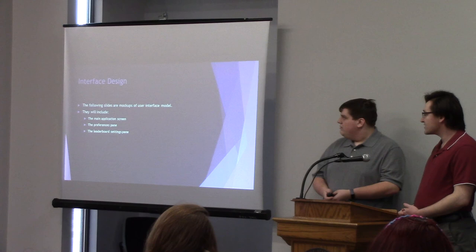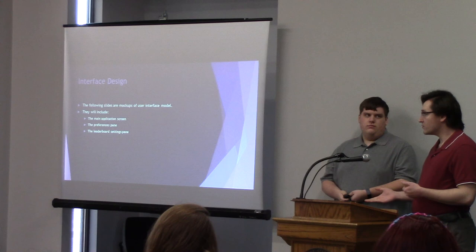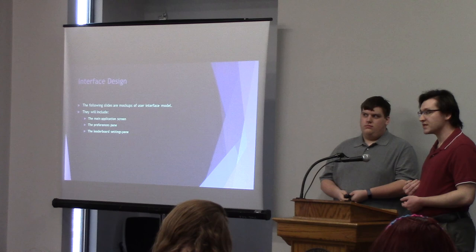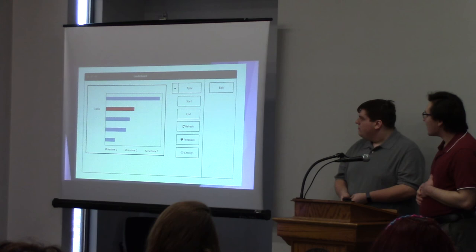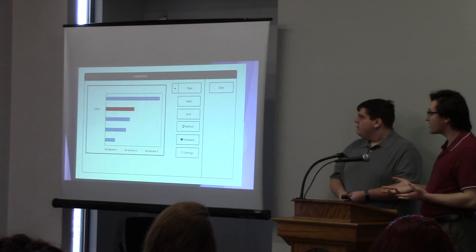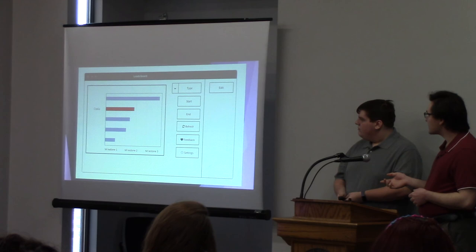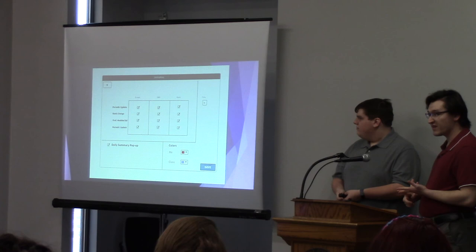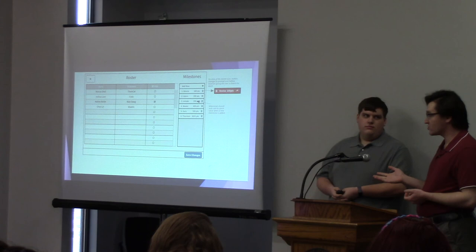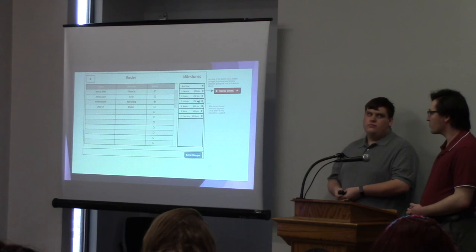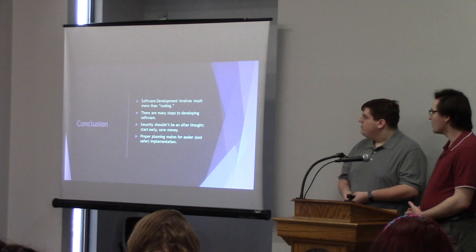For interface design, this is our last step. We just want to show the people using this application what they can expect their user interface to look like, and this also helps us plan how everything goes together. This is our main page with a few buttons to navigate or modify the leaderboard. The settings page is where users can specify colors and choose notifications. The last major one is the milestones and leaderboard editing pane for teachers — no one else will be able to access this.